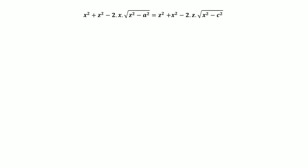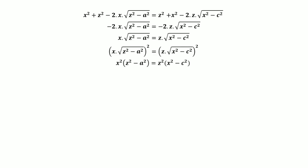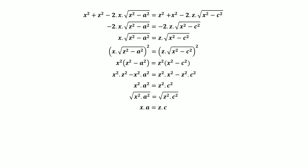Equating Equations 1 and 2, subtracting x² and z² from both sides, then dividing both sides by −2, we get x·√(z² − a²) = z·√(x² − c²). Squaring both sides: x²(z² − a²) = z²(x² − c²). Expanding and simplifying, x²·z² cancels, giving x²a² = z²c², so x·a = z·c. Note this important result.